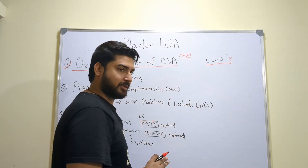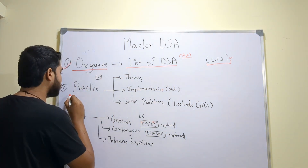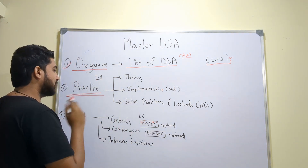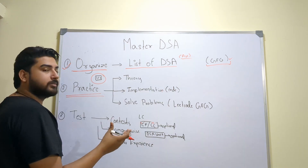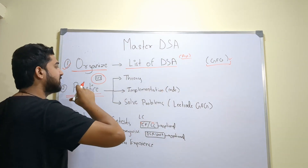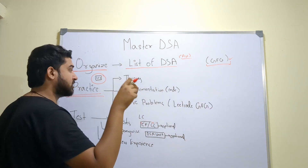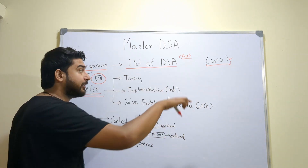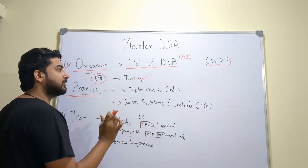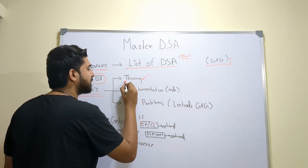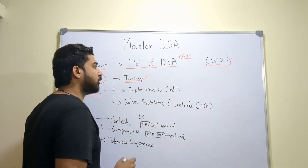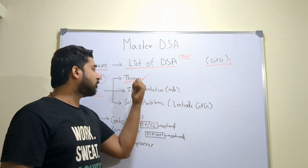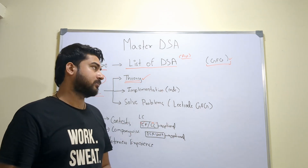Once you have the list organized, the next thing you need to do is practice. How you practice is again very important and a lot of people make mistakes here. One by one, get each data structure or algorithm from the list. First, you're going to learn the theory. This is something a lot of people avoid, but you have to give it a little bit of importance. Because what happens is students don't focus on theory and end up confused. If you don't know the basic concepts of a data structure, you will not be able to solve the problems.